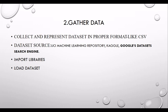In machine learning when working in computer science, for example when you define a classification problem like the iris dataset, you have to gather data according to your project. You can collect data primarily by going and doing surveys, or you can get data from secondary sources like the UCI Machine Learning Repository, Kaggle, and Google's Dataset Search Engine.